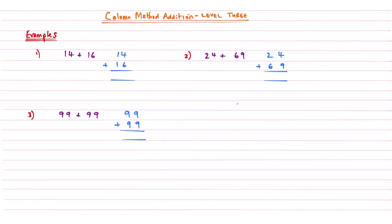So just a quick example: if we do 24 add 81, then 4 add 1 is 5, and then 2 add 8 is 10. What you'll see we're doing is writing this 1 underneath an invisible column. Column Method Addition Level 3 expands on that concept, and we look at what happens when any of the columns has a sum that is 10 or above.